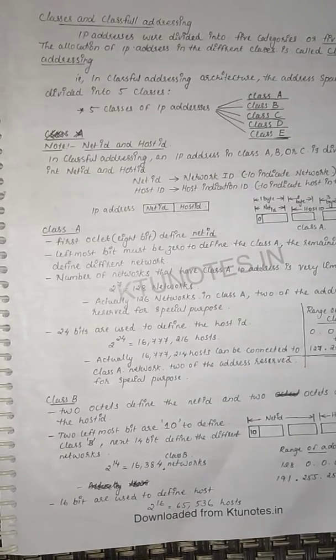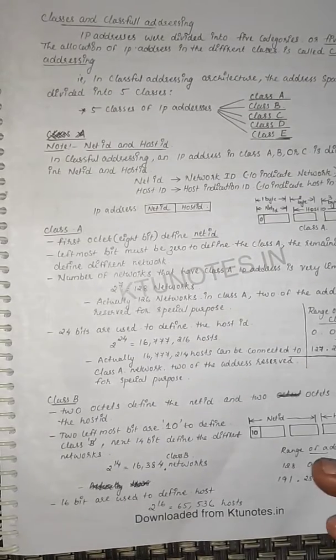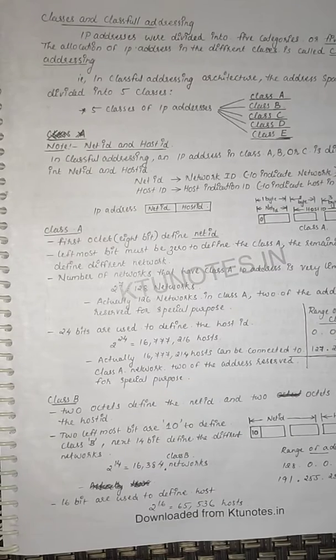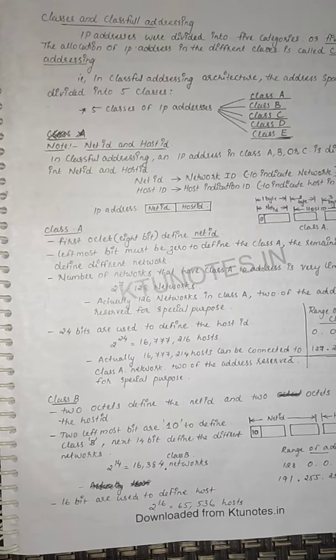Good evening. Yesterday we talked about IP addressing and we had to discuss classes and classful addressing. Today we will discuss the portion of IP address and the types of addresses, IPv4 and IPv6, and their representation — dotted decimal notation as well as binary notation.